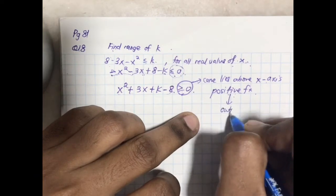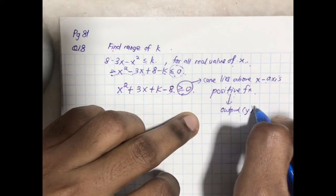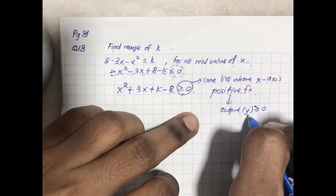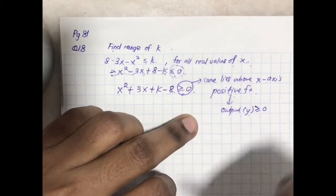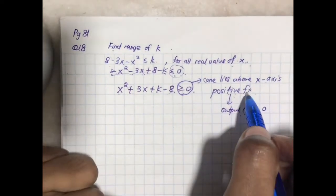If you are wondering what positive function means, the output, output i.e. the y, the y has to be either equal to 0 or more than 0. So any x value you put, your y value has to be 0 or anything greater than that. That is the meaning of positive function.